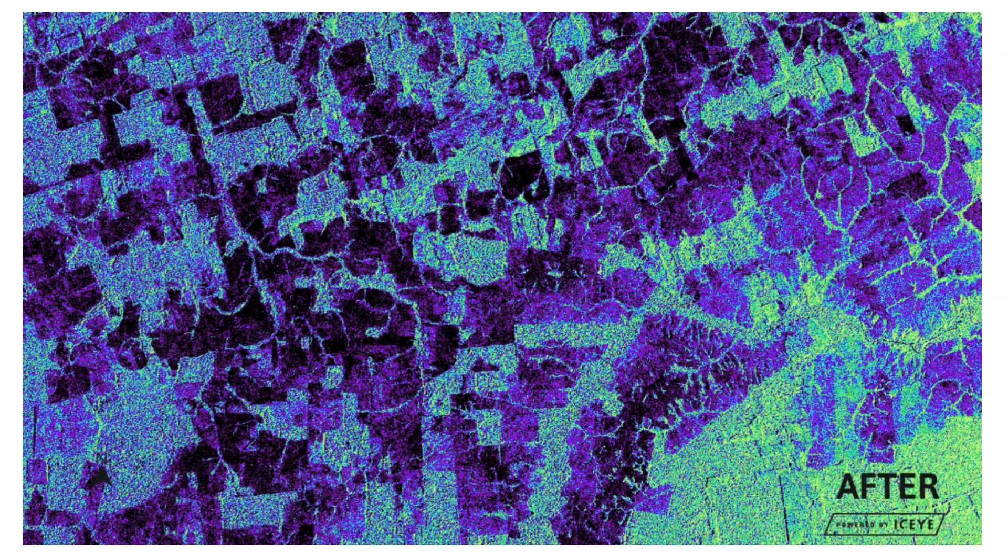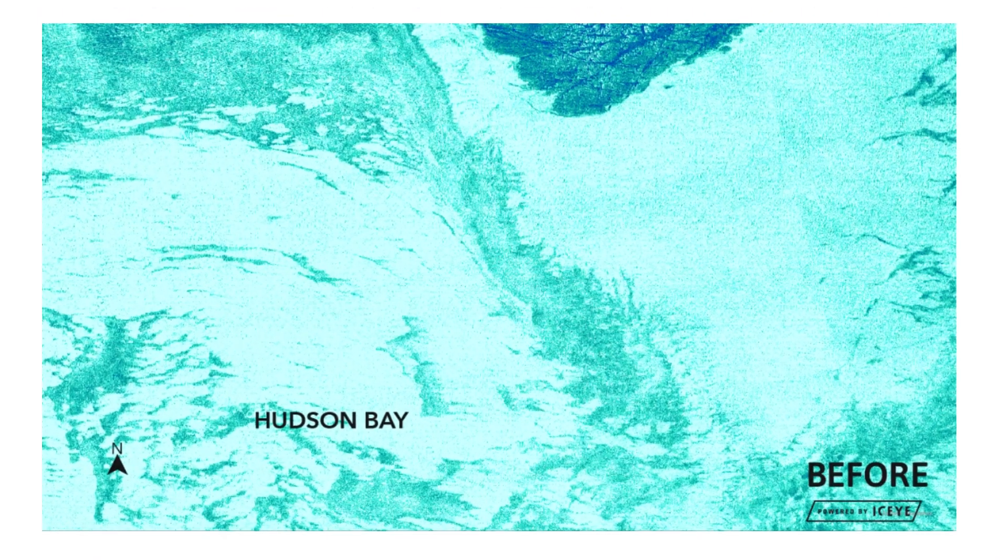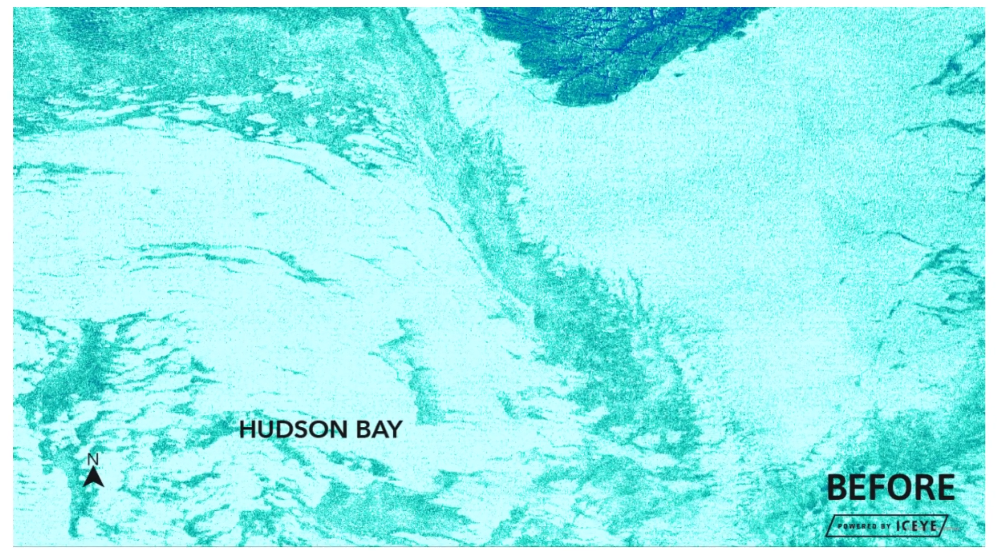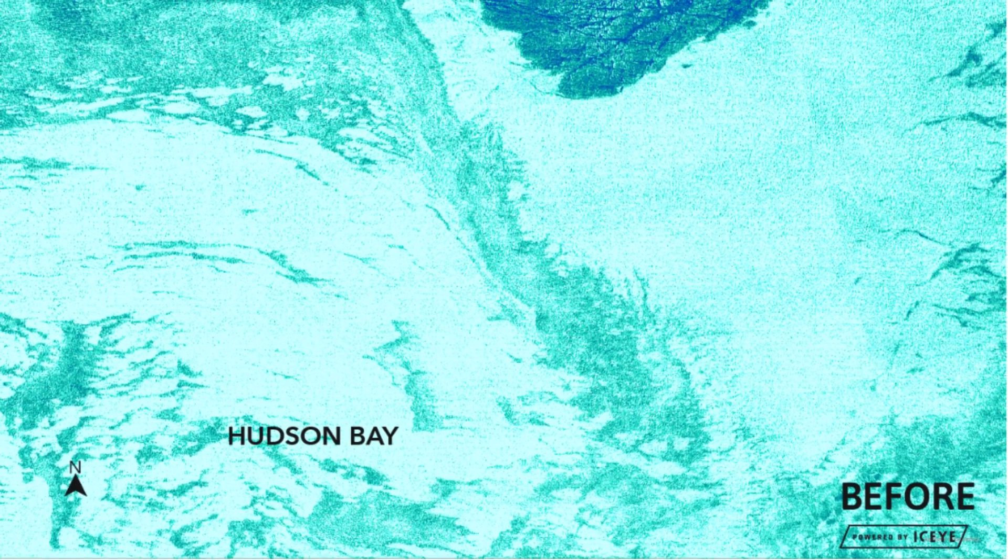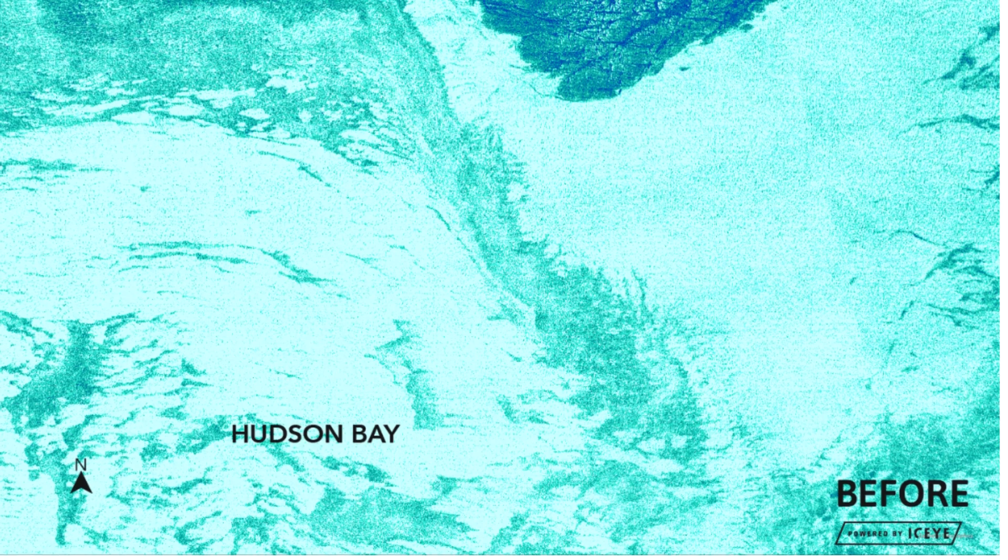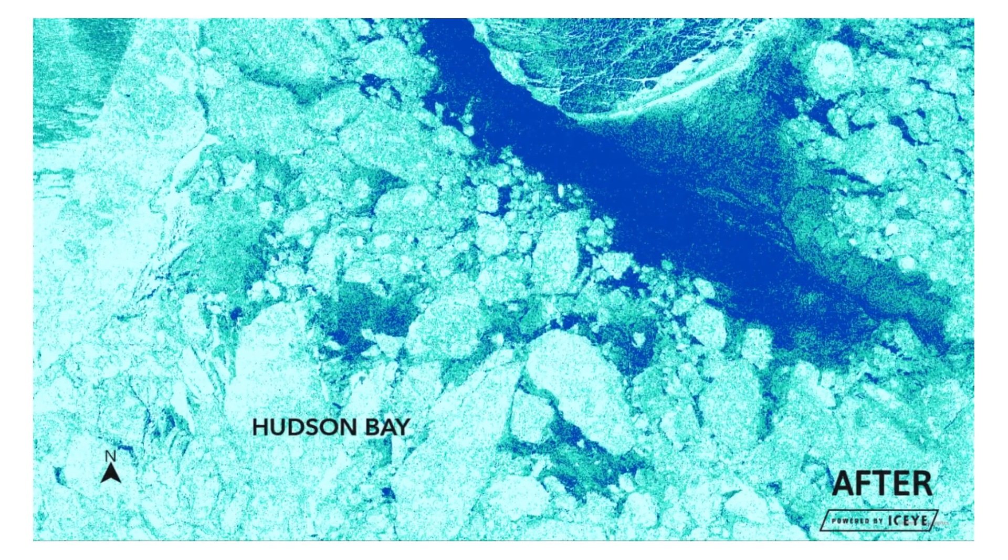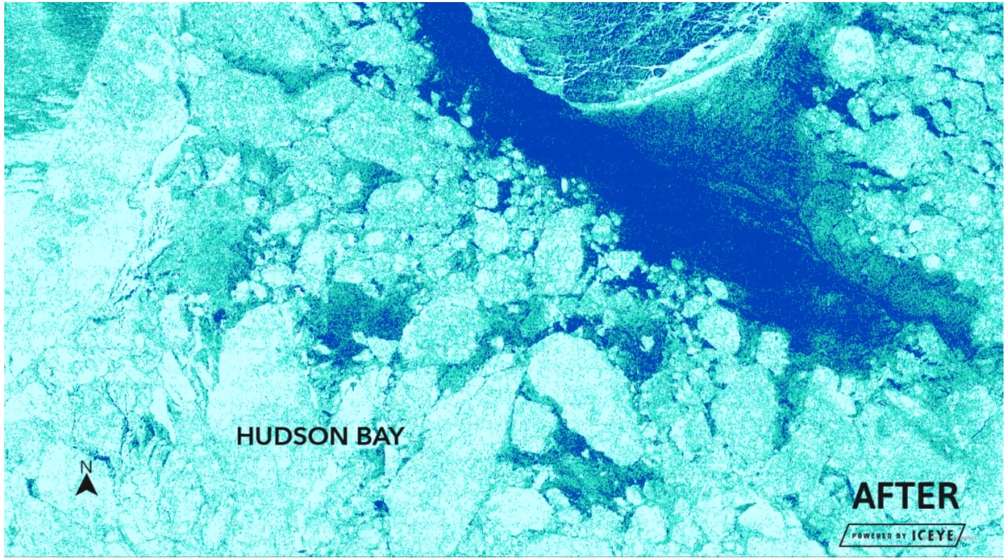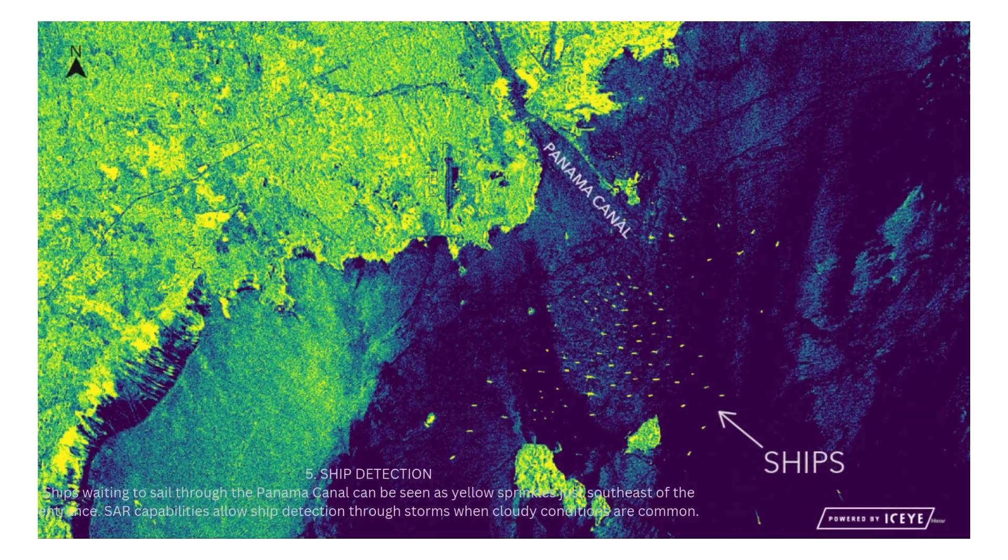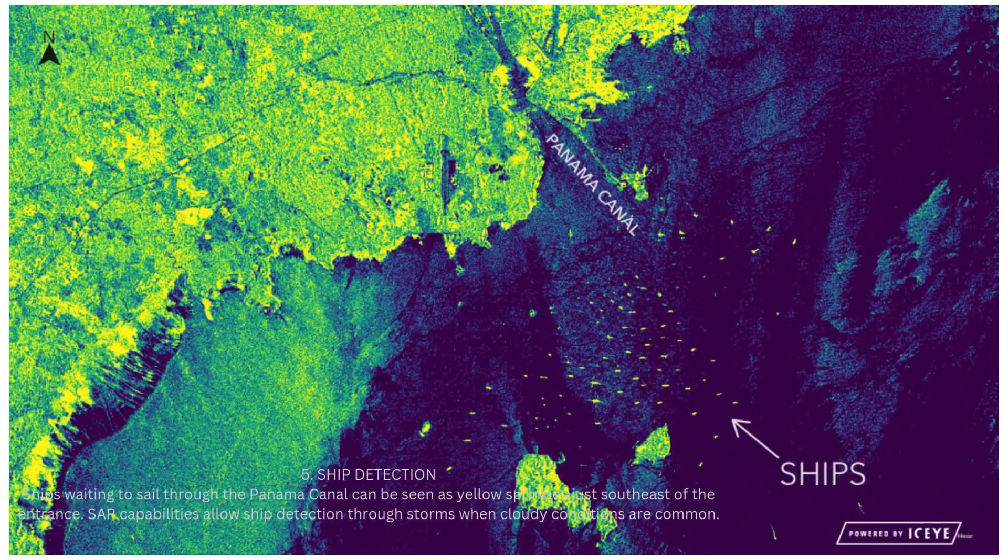4. Sea Ice. Between December 17, 2021 and February 13, 2022, the sea ice in the Hudson Bay is starting to melt and break up into small pieces. SAR imaging of sea ice during dark arctic winters provides useful navigation insight. The oil through the Panama Canal can be seen as yellow sprinkles just southeast of the entrance. SAR capabilities allow ship detection through storms when cloudy conditions are common.